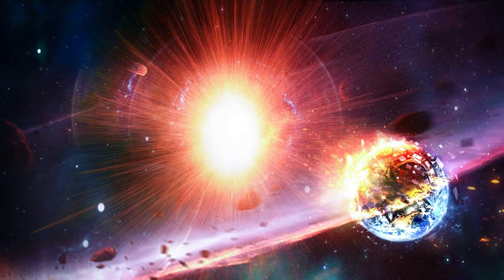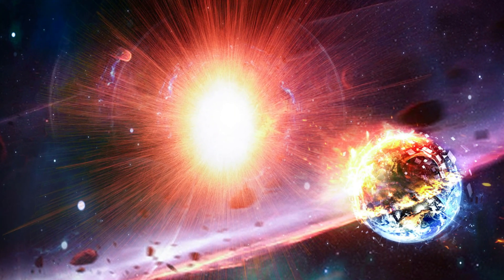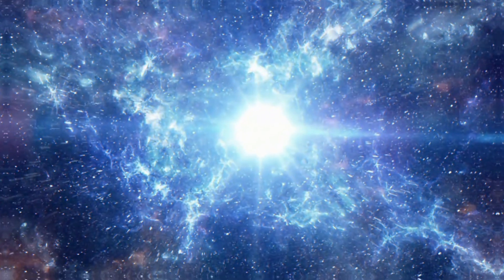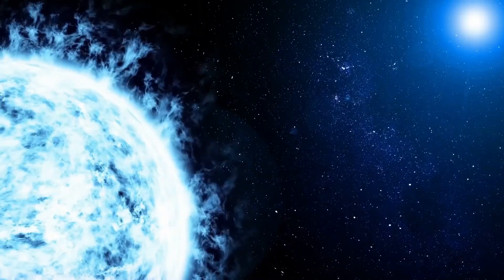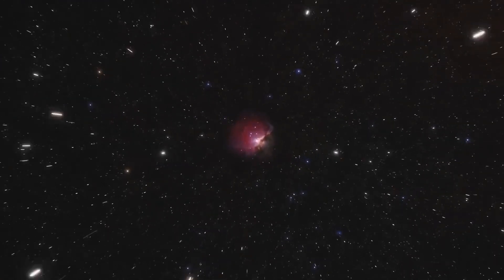However, the discovery of bright radiation coming from a red supergiant in the year before it exploded shows that at least some of these stars go through major changes in their internal structure that cause gas to be thrown out just before they explode.